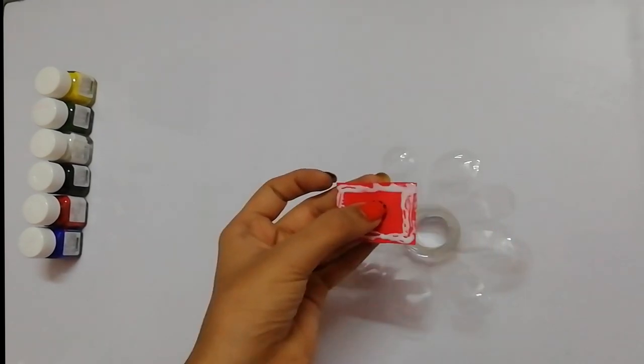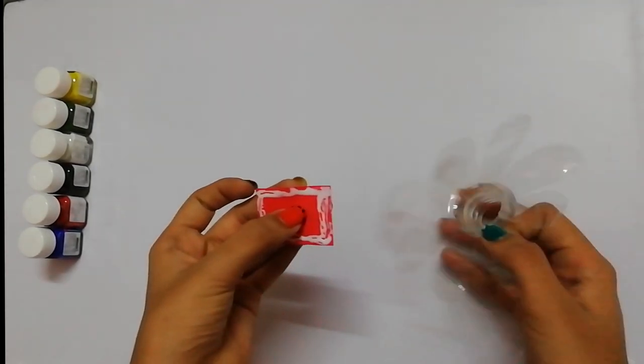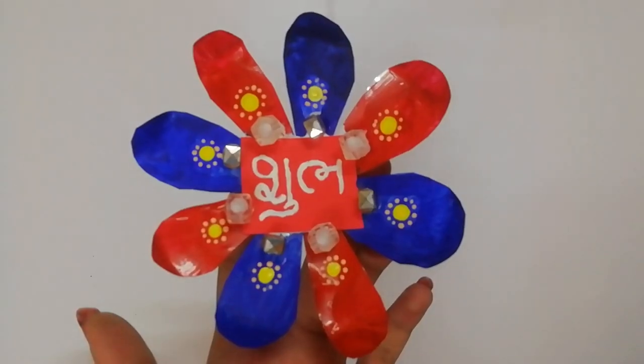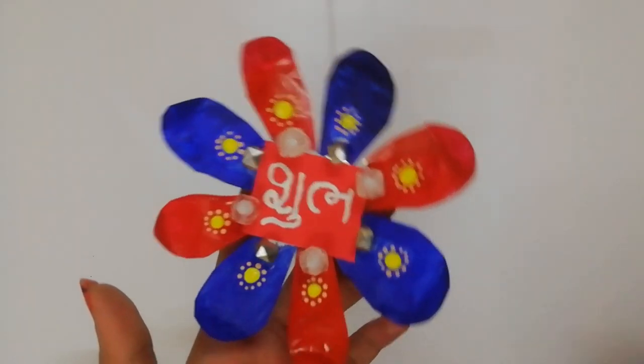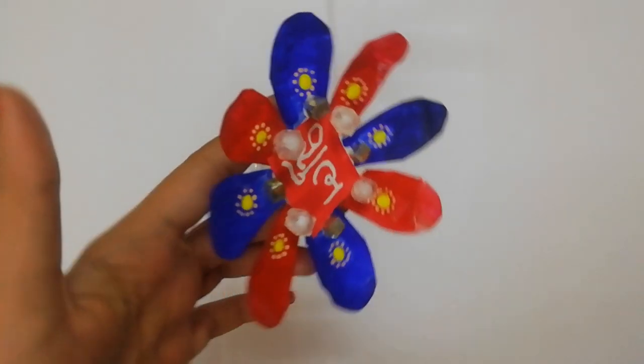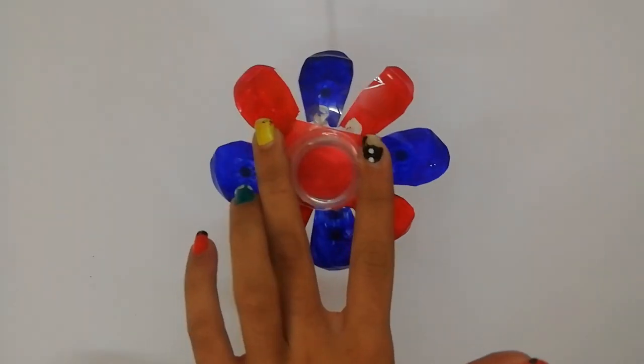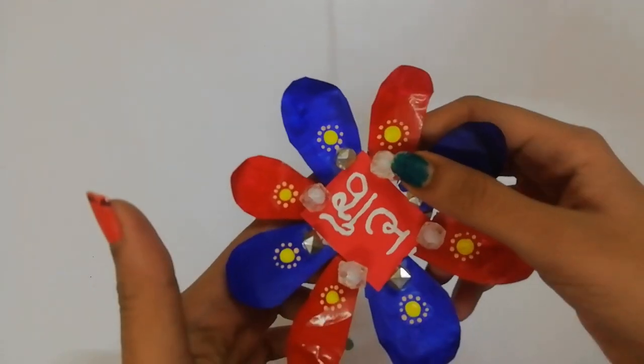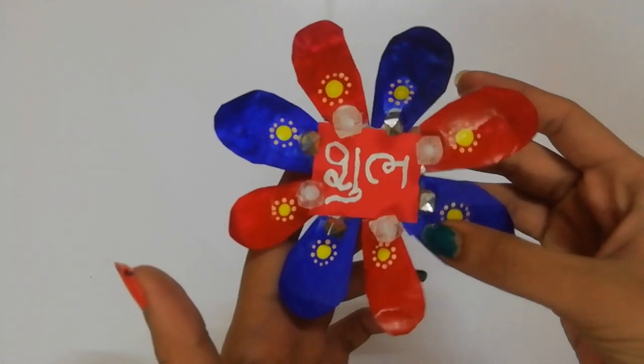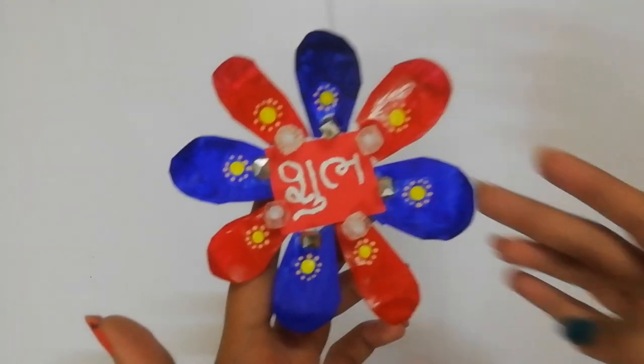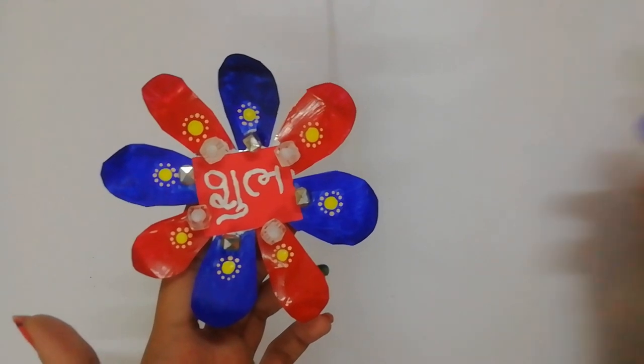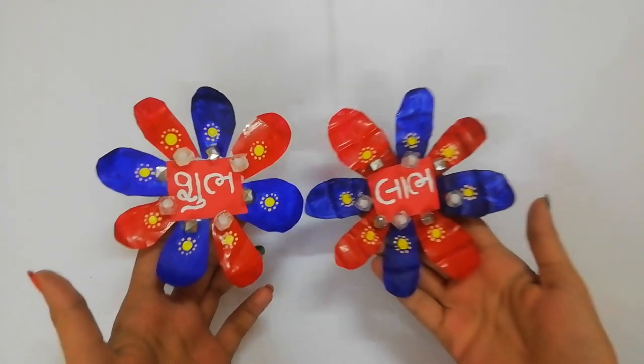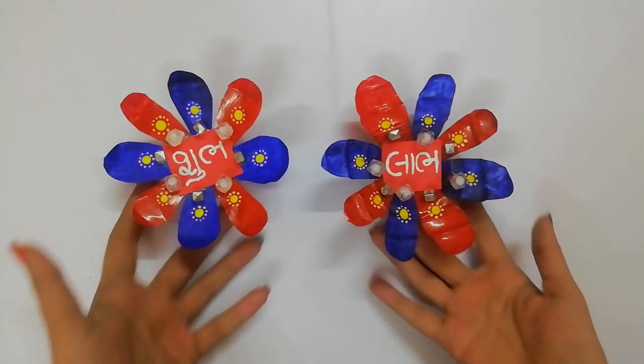Now I will cut some paper and put it in the center. I have decorated it with stones and acrylic color. I suggest that you don't use watercolors because it will be removed from the plastic and your hands. So use acrylic color. If you don't have acrylic color, you can also use nail polish. It will also look good.